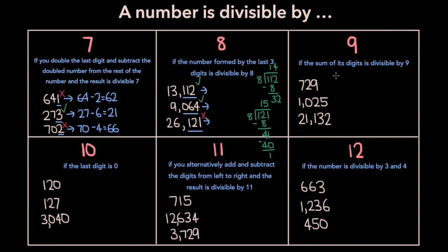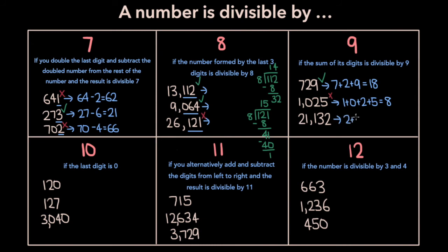To check if a number is divisible by 9, you sum up its digits and see if the result is divisible by 9. So for example, for 729, we get 7 plus 2 plus 9, which is 18. 18 is divisible by 9 — 18 divided by 9 is 2 — and so 729 is divisible by 9. For 1025, we get 1 plus 0 plus 2 plus 5, which is 8. 8 is not divisible by 9, so 1025 isn't either. Now for 21,132, the digit sum is 2 plus 1 plus 1 plus 3 plus 2, which is 9. 9 is divisible by 9, so 21,132 is divisible by 9 as well.